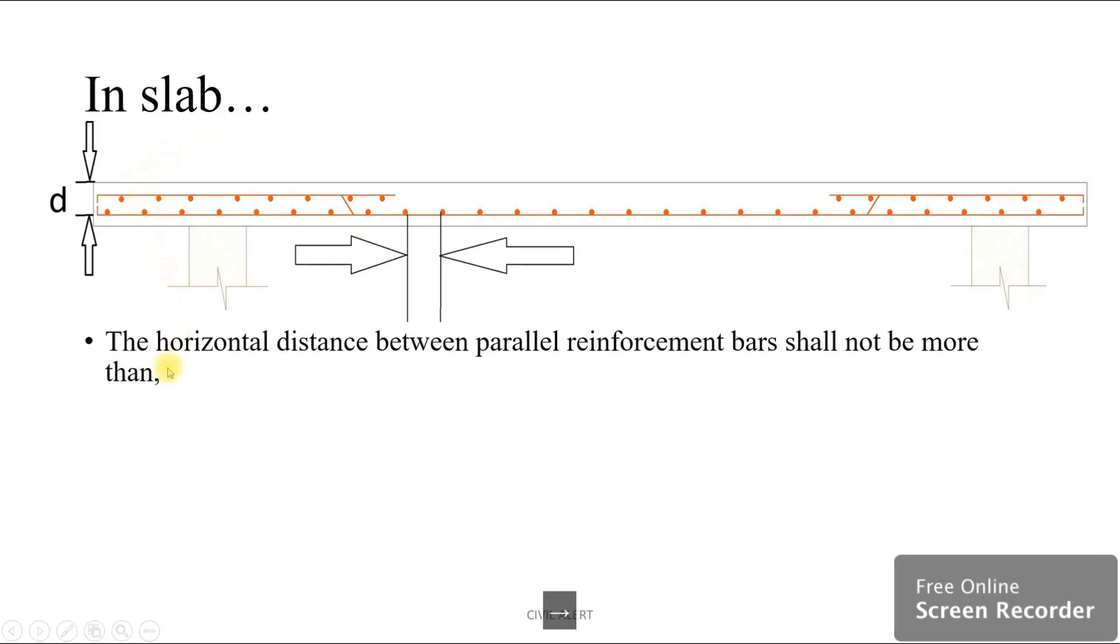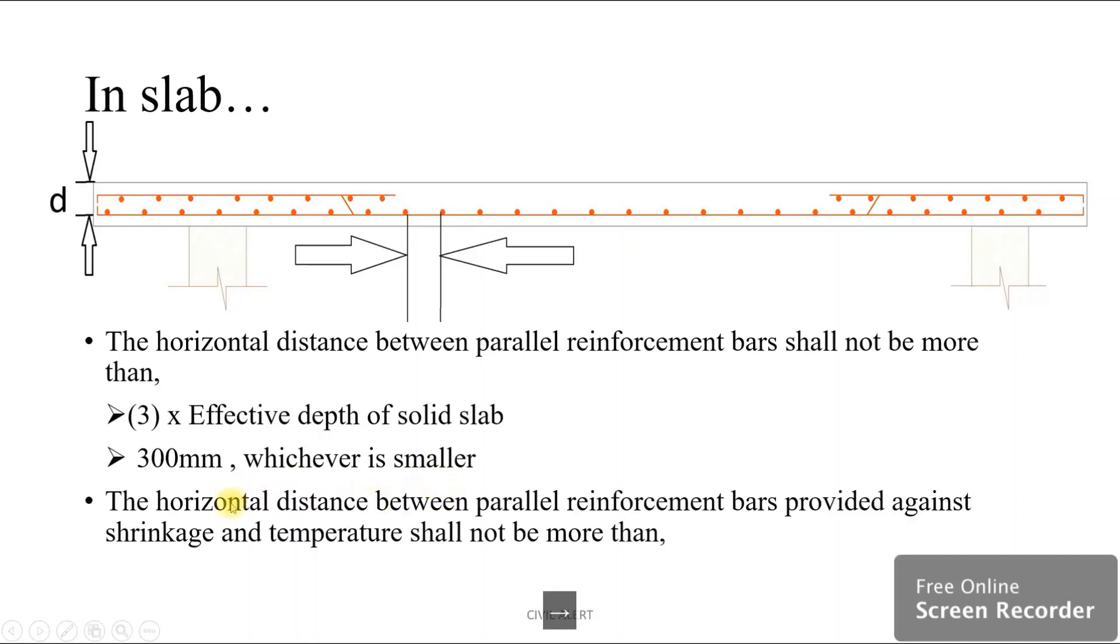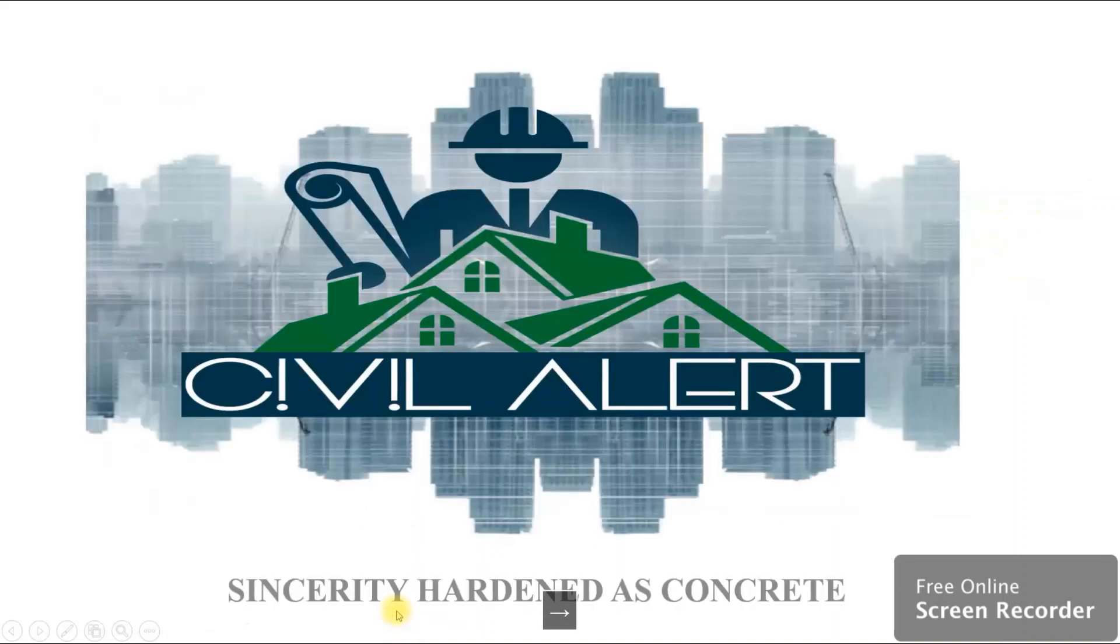In case of slabs, the horizontal distance between parallel reinforcement bars shall not be more than 3 times the effective depth of solid slab or 300 mm, whichever is smaller. The horizontal distance between parallel reinforcement bars provided against shrinkage and temperature shall not be more than 5 times the effective depth of solid slab or 450 mm, whichever is smaller. Thank you.